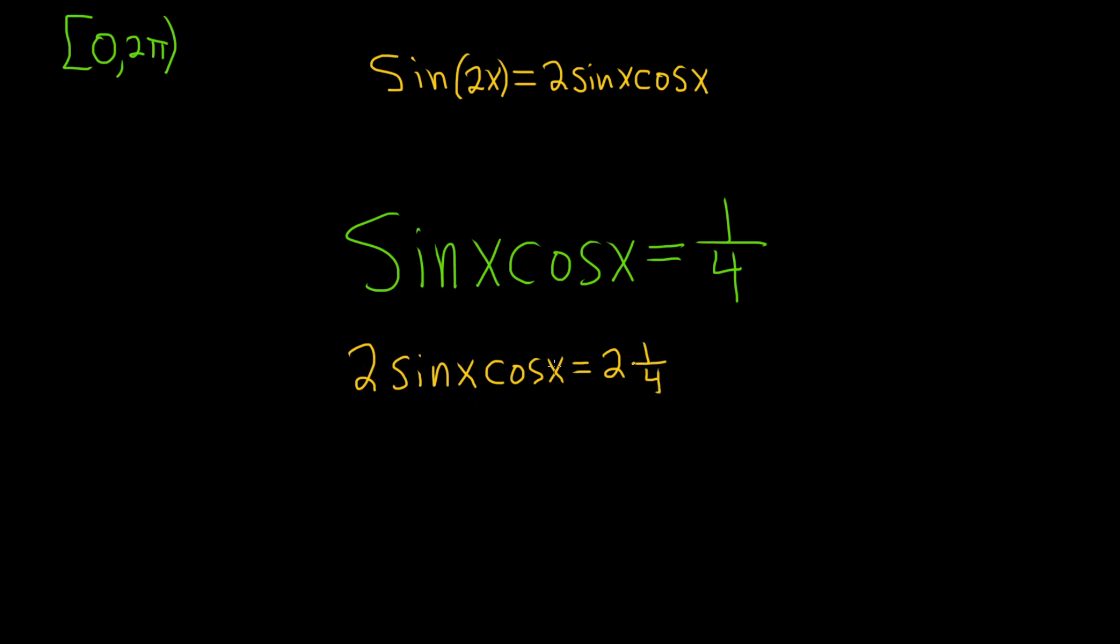So now the entire left-hand side, 2 sin x cos x, is going to become sin 2x. And that will be equal to 1 half.